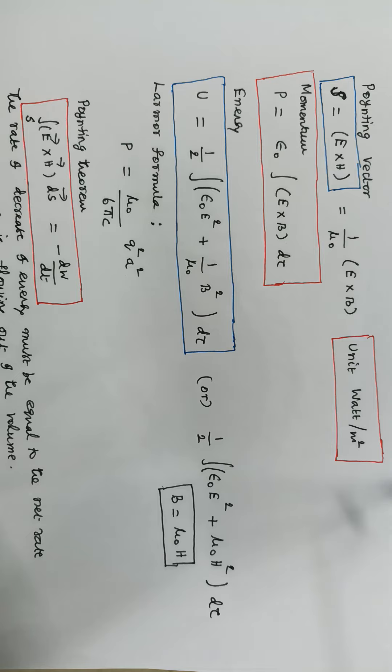The Lama formula is given by P equals μ0 divided by 6πC into Q square A square.